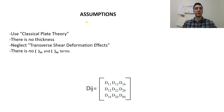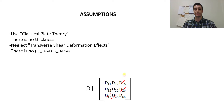So we are going to have some assumptions. First of all, we are going to use classical plate theory, and that means the 1-6 and 2-6 terms will be zero.